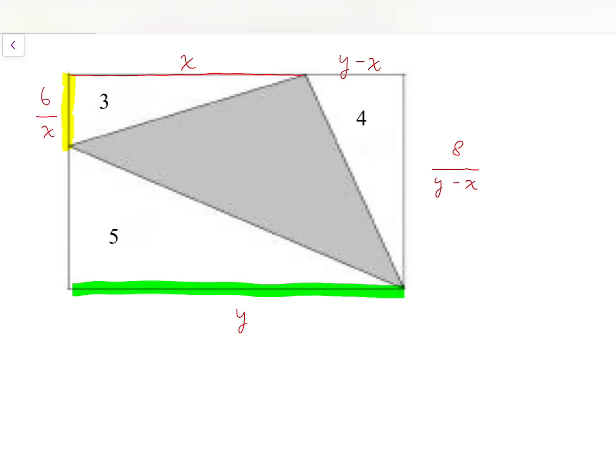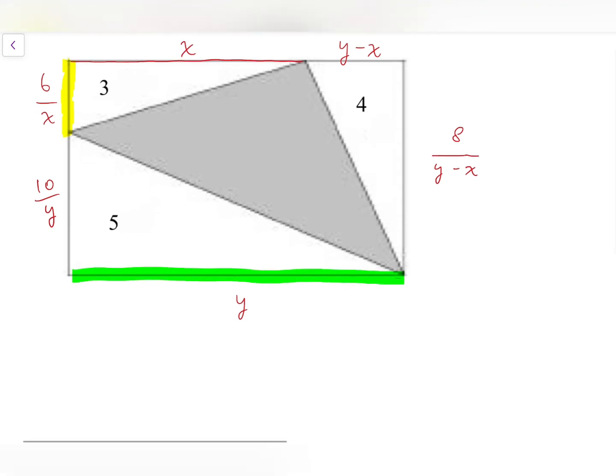At the same time, there are two ways for us to express the width. First is 8 over y minus x. The second way is split into two parts, with one part being 6 over x, the yellow part, and the other part using the area of the bottom left triangle is 10 over y. So now by expressing the same thing in two different ways, I can equate them and do some algebra.